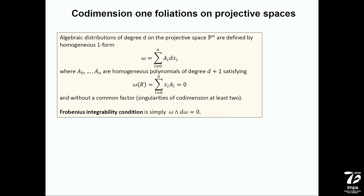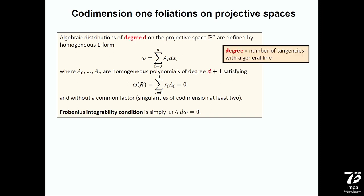Let me start posing the problem. We are considering foliations on P^N, where N can be any value from two upward, though soon we will restrict to N at least three. I can always write these codimension-one foliations as objects defined by one-forms — homogeneous one-forms — consisting of N+1 homogeneous polynomials of a certain degree, which I will write as D+1. To descend to the projective space, we ask this one-form to be annihilated by the radial vector field.